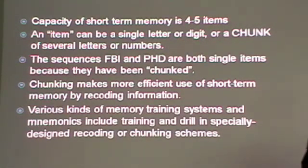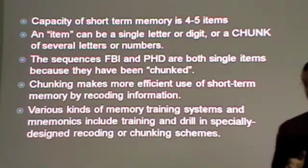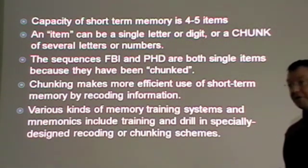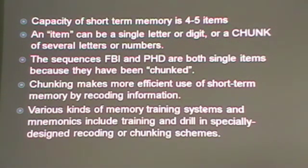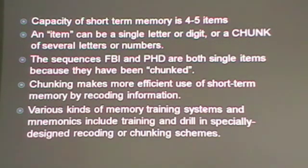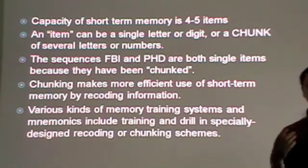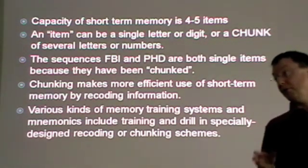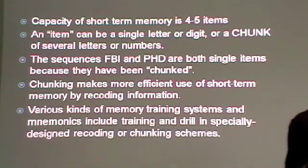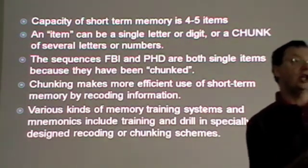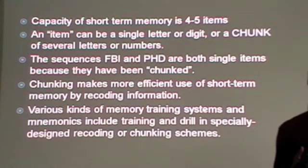Even though the capacity of short-term memory is only four to five items on modern estimates, an item doesn't necessarily have to be a single digit or a letter. It can be a chunk of information, and a chunk can consist of several numbers or letters. For a chunk to be a chunk, it has to be some kind of meaningful unit. So the sequences FBI, GHD, and so on can both be regarded as single chunks — single items — because those three letters have been chunked together into what is already a meaningful, recognizable unit.